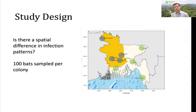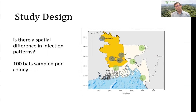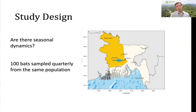How did we design our study? The scientific question was twofold. We wanted to understand whether there was any difference in infection patterns in bat colonies in the western part of Bangladesh — where most human outbreaks had occurred historically, called the Nipah belt — versus populations in other parts of the country where no outbreaks had been reported. So we set up a cross-sectional study looking at eight colonies of bats, 100 bats per colony, four in the Nipah belt and four in other parts of the country. We also wanted to understand if there was seasonality to infection in bats, so we set up a longitudinal study looking at a single population in Faridpur, right in the middle of the Nipah belt, testing the same population quarterly for a six-year period.